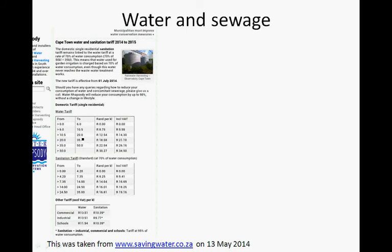Between 6 and 10.5 kilolitres you are charged R8.75 per kilolitre, and including VAT that is R9.98. Between 10.5 and 20 kilolitres you pay R14.30 per kilolitre. Between 20 and 35 kilolitres you pay R21.18. This is called the gliding scale. The sanitation tariff is 70% of your water consumption: 4.20 to 7.35 kilolitres at R9.41, and so on. Commercial properties pay R13.51 per kilolitre for water, R10.39 for sanitation.